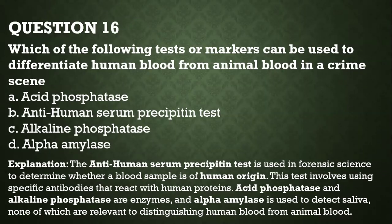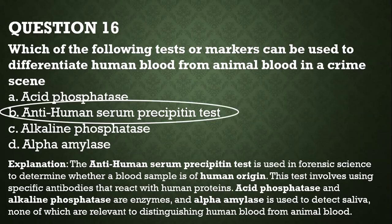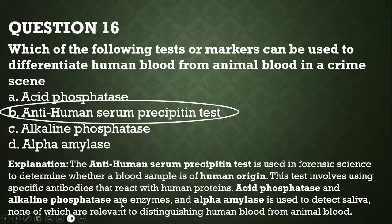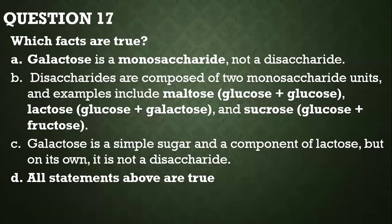Question number sixteen: which of the following tests or markers can be used to differentiate human blood from animal blood at a crime scene? You would use the anti-human serum precipitating test. Acid phosphatase is used for seminal fluid. Alkaline phosphatase and alpha amylase are not used for this purpose. The anti-human precipitating test is used in forensic science to determine whether a blood sample is of human or animal origin, using specific antibodies that react with human proteins.